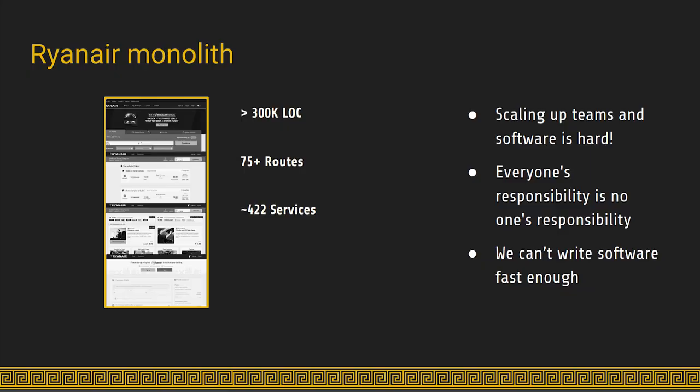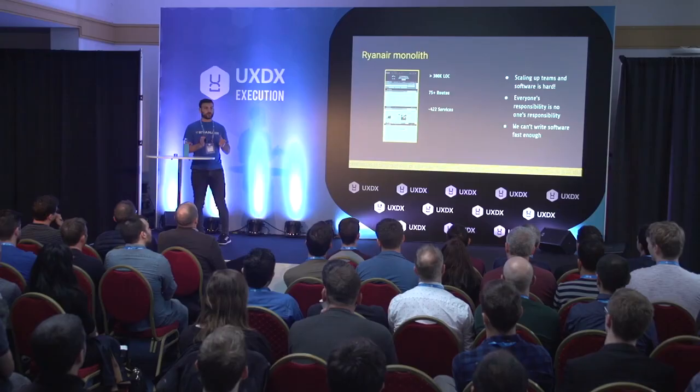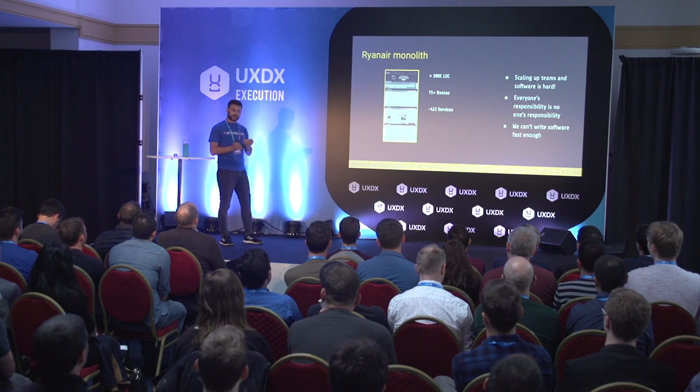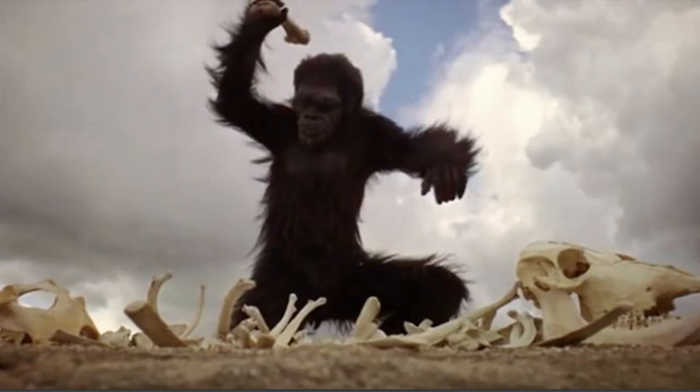These are heavy application pages with heavy business logic. What we realize is that scaling up teams and software is hard. When you have more than 10 distributed teams working on the same codebase, there's no clear division between teams — everyone is responsible, so in the end no one is responsible. We can't grow software fast enough with a monolith, so what's left is to break down the monolith.